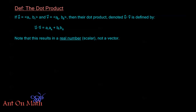If u has the component form a1, b1, and v has the component form a2, b2, then their dot product, which we denote by u dot v — that multiplication dot we use in basic algebra — when we see this dot with two vectors it's very important: we're not multiplying the vectors. We're using the dot product, and we define it as: u dot v equals a1 times a2 plus b1 times b2.